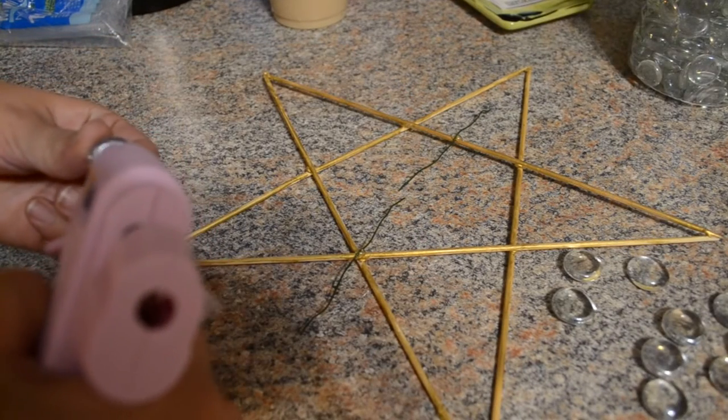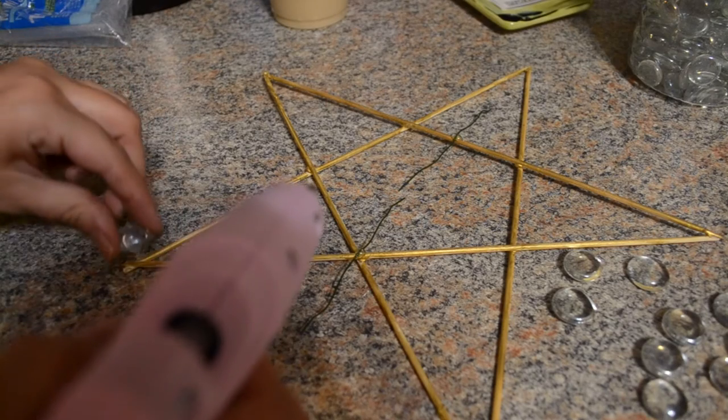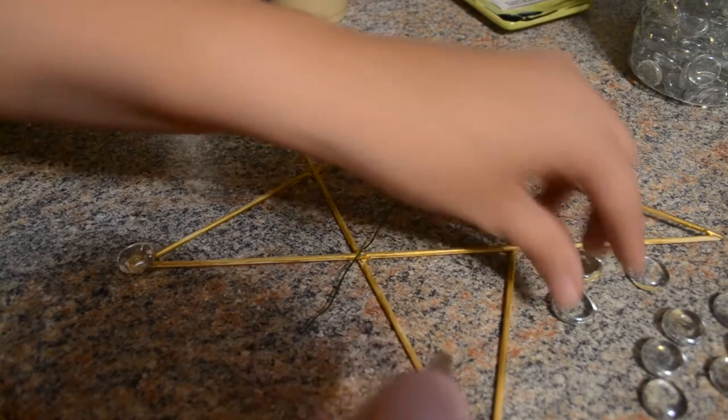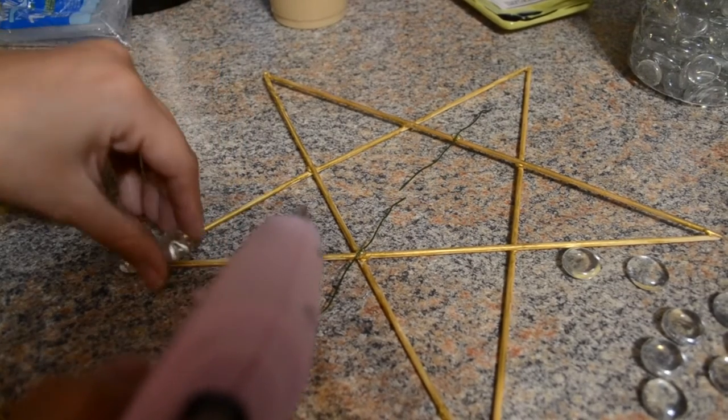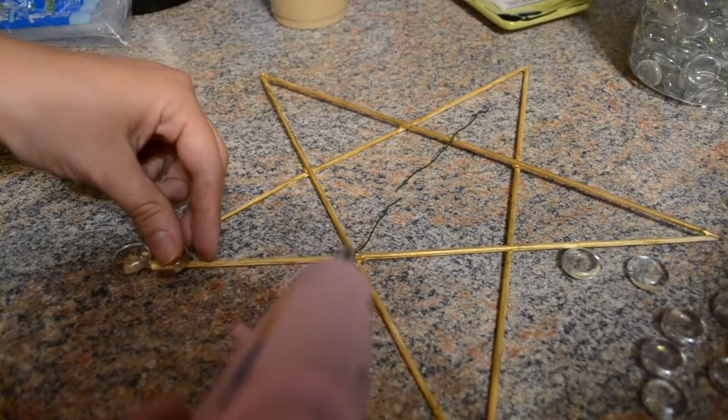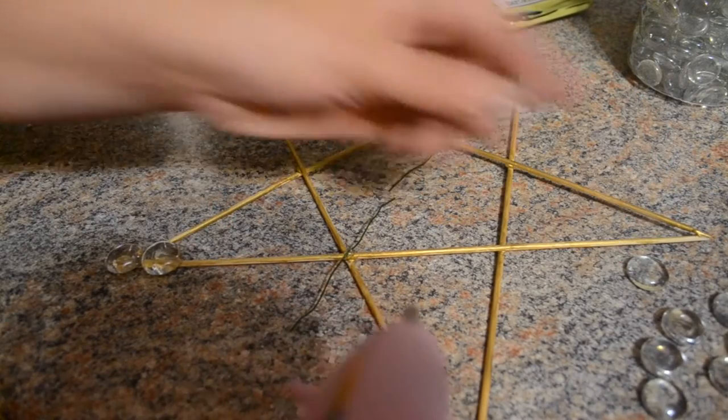The last and final part to this craft is just taking your beads and hot gluing them down onto your sticks. Now I would hold them a little bit longer than I did because I didn't hold them very long and they ended up starting to fall off on the end and I had to re-glue a lot. So just really take your time and press it down on there.